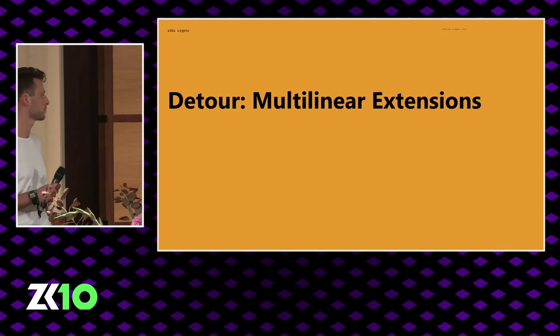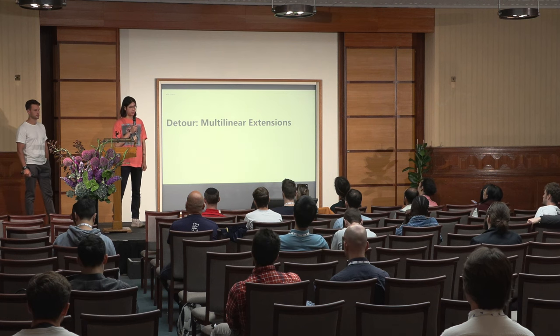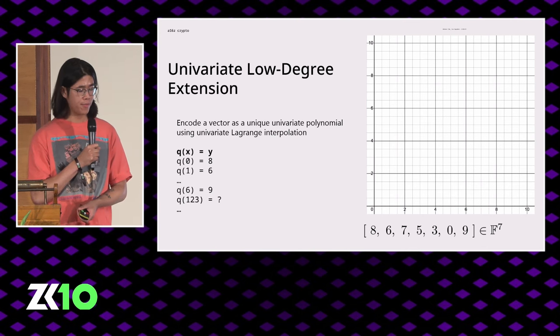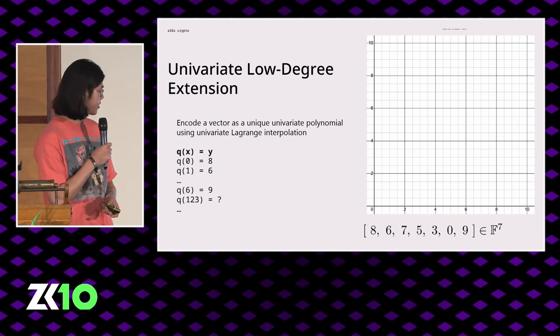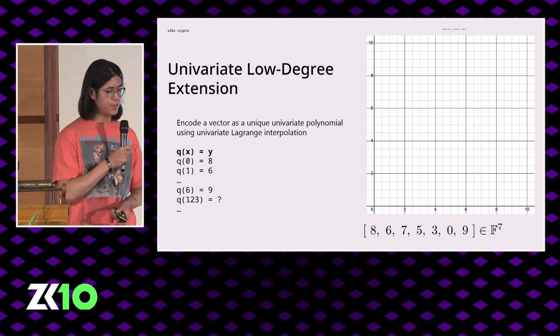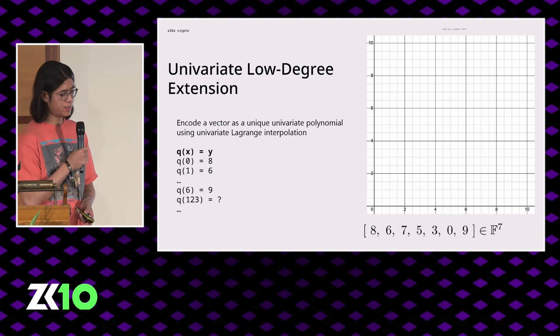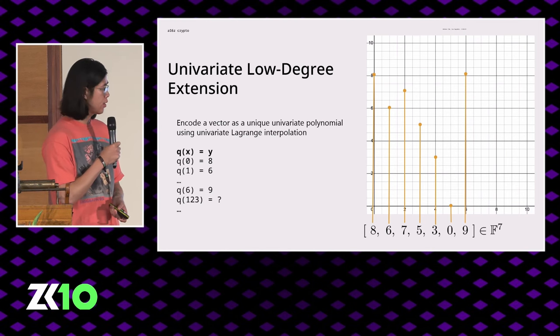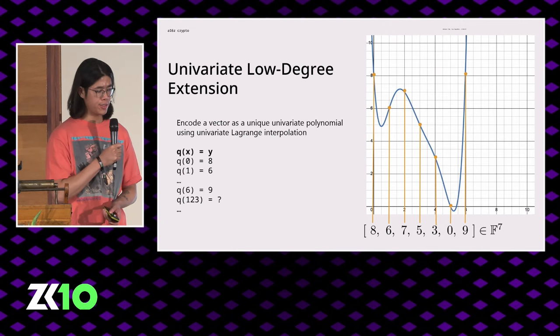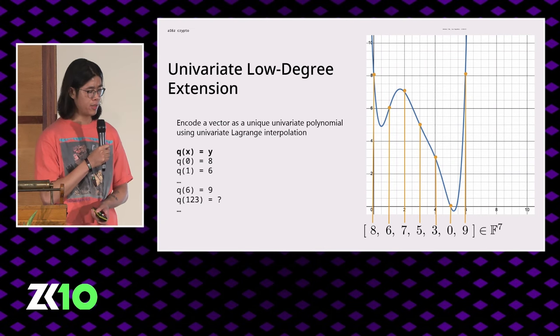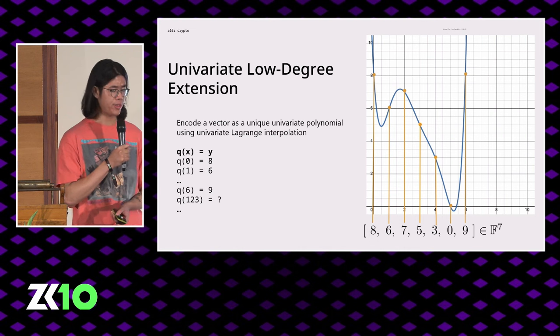For some quick math background, Lasso and Jolt heavily leverage techniques based on multilinear extension polynomials. For those more familiar with univariate counterparts, we'll give a brief overview and comparison. Let's say we have some data to encode as a polynomial — here we have field elements 8, 6, 7, 5, 3, 0, 9. We can use univariate Lagrange interpolation: these elements get mapped to points where the x-coordinates correspond to their indices within the vector. We interpolate a polynomial on top — q of 0 equals 8, q of 1 equals 6, and so on. We can also evaluate this polynomial outside of the domain 0 to 6, at an arbitrary field element such as 123.